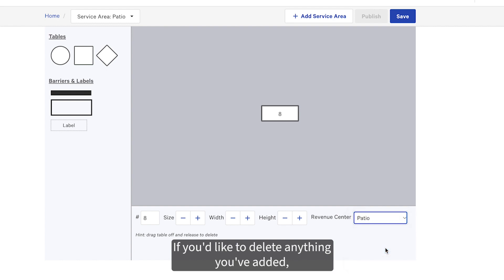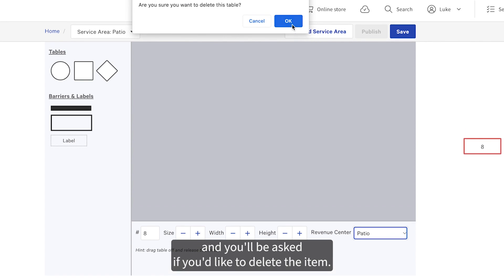If you'd like to delete anything you've added, simply drag the table outside of the layout and you'll be asked if you'd like to delete the item.